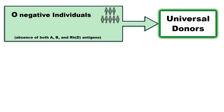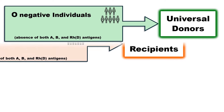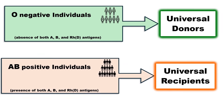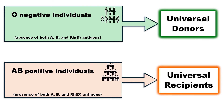O negative individuals are often referred to as universal donors because their blood type lacks both A and B antigens as well as the RHD antigen, making it compatible with nearly any recipient's blood type. On the other hand, AB positive individuals are often called universal recipients because they have both A and B antigens on their red blood cells, making them capable of receiving blood from donors with any ABO blood type.